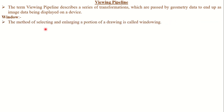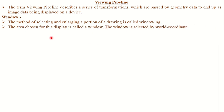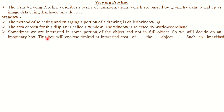What is the window? The method of selecting and enlarging a portion of a drawing is called windowing, and the area chosen for displaying is called the window. For example, during a cricket match we select a specific portion — like the batting of a particular player. That selected scene is called a window, because there are many other scenes but we are selecting only a particular one. Sometimes we are interested in only some portion of an object and not the full object, so that small part is simply known as a window. We decide on an imaginary box that encloses the desired area of an object — such an imaginary box is called a window.